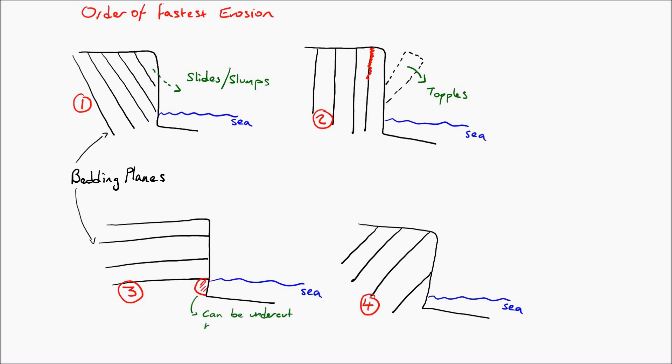In number three, however, they are horizontally stacked. This adds an element of strength to it and they can become undercut and still retain their shape.